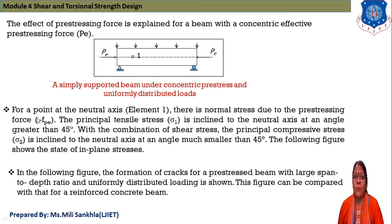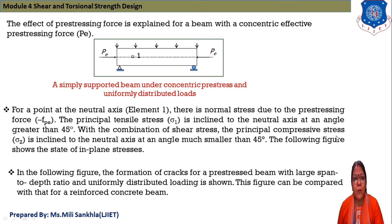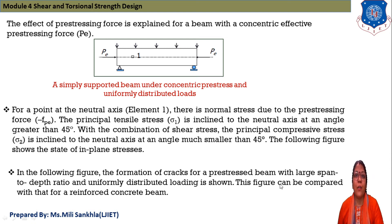At the neutral axis, element one has normal stress due to pre-stressing force of minus fpe (compressive force). Principal tensile stress sigma-1 is inclined to the neutral axis at greater than 45 degrees, and principal compressive stress sigma-2 is inclined at less than 45 degrees. Crack formation for a pre-stressed beam depends on the span-to-depth (l/d) ratio and uniformly distributed load.